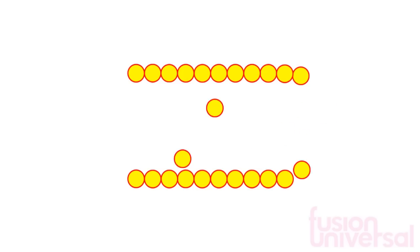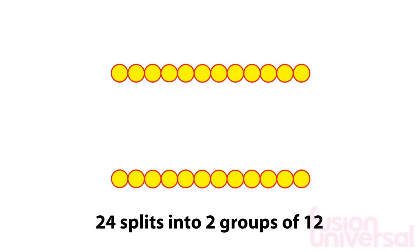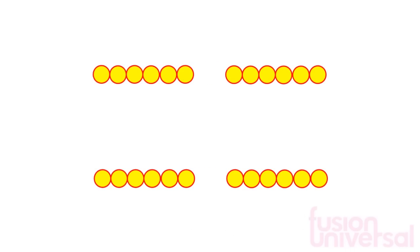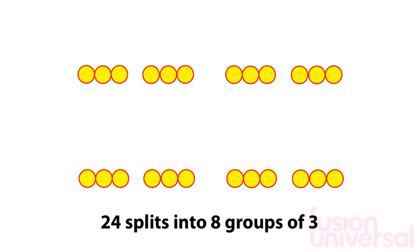We could have 2 groups of 12 counters. Or 4 groups of 6 counters. Or 8 groups of 3 counters. Each time 24 has been split into equal sized groups.